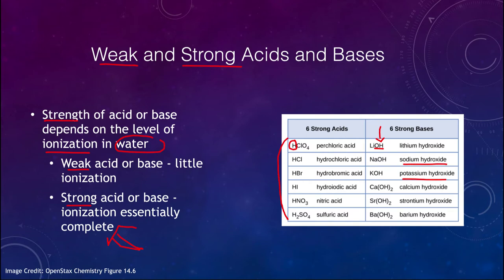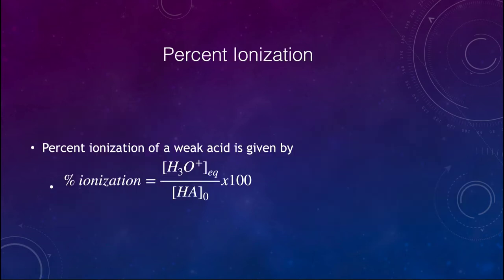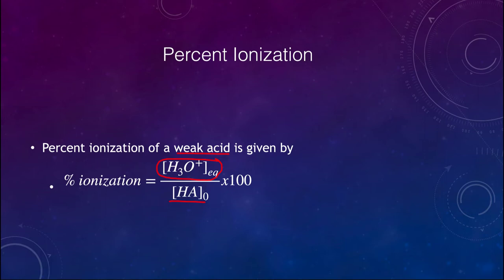We can also look at this in terms of percent ionization, and we can calculate the percent ionization of a weak acid. Why not a strong acid? Remember, a strong acid is essentially 100% ionized. But a weak acid can be a different percentage. We look at that by the concentration of the hydronium ion at equilibrium, divide that by the molarity of the acid itself, and multiply by 100 to convert it into a percentage.